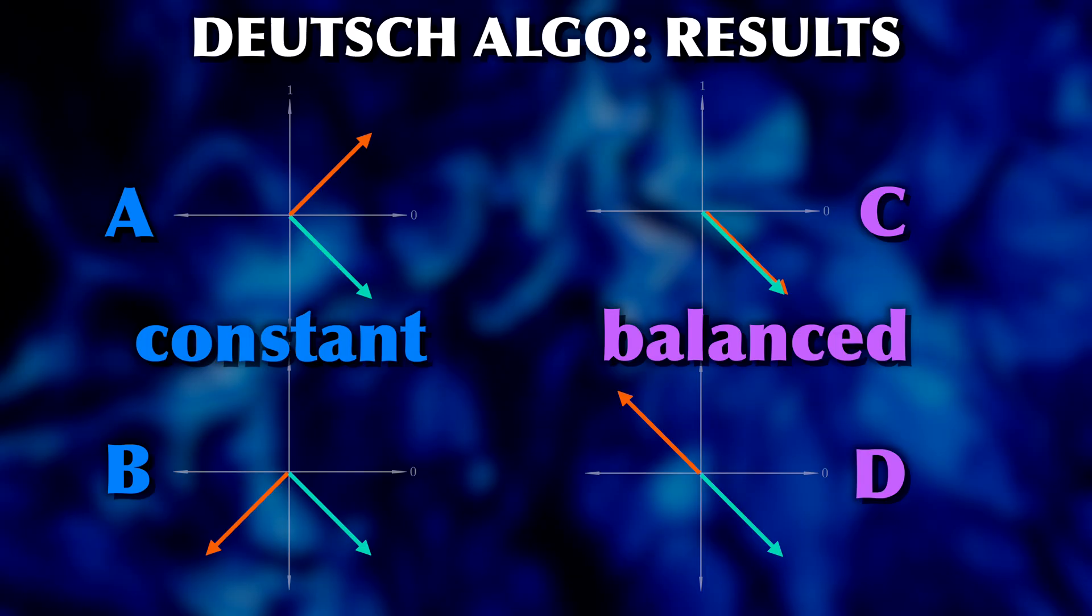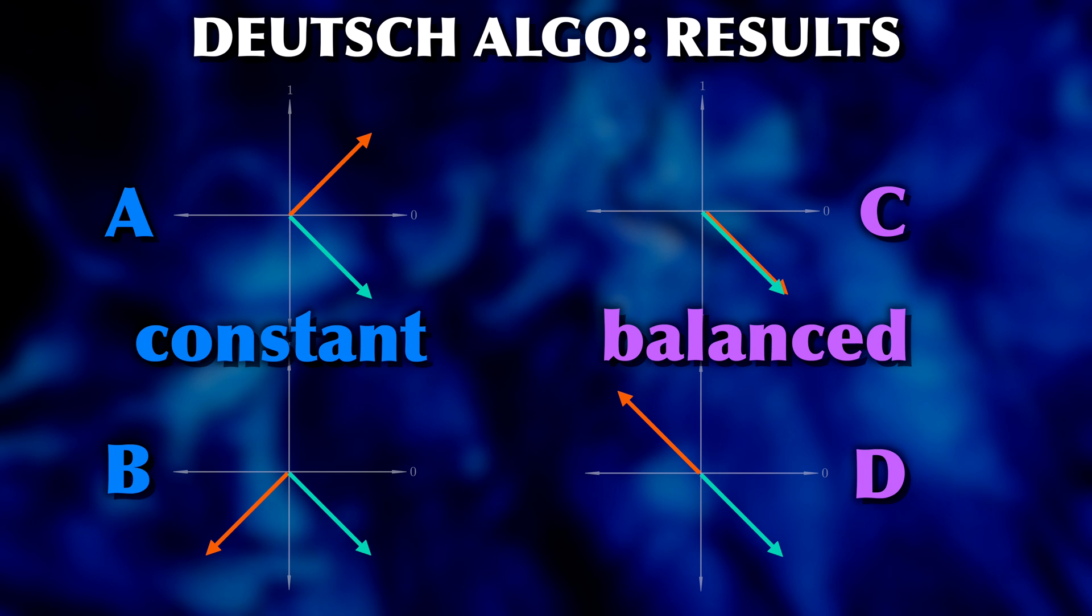Also note that in the end it wasn't really about which particular state the qubits are in or which particular output the function would generate. It was all about a property of the states, whether the state vectors were perpendicular or parallel. It wasn't about the states themselves, but about the angle between the two states, which we call the phase.